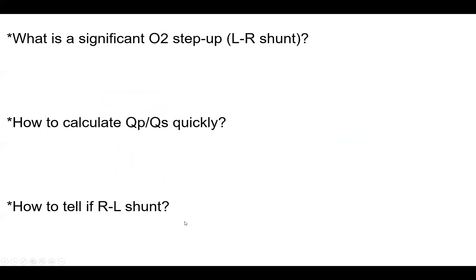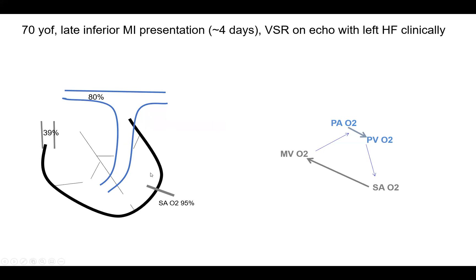The third question is how to tell if you have a right-to-left shunt. Left-to-right shunt shows as a step up between SVC and PA. For right-to-left shunt, you would look for a step down between pulmonary venous oxygen saturation and arterial O2 saturation. But we're not doing transseptal puncture and we're not sampling the pulmonary veins. So one way of telling is: are you hypoxic?